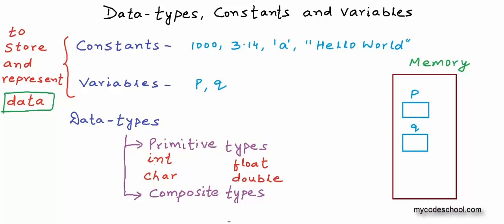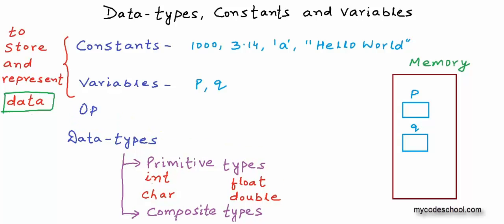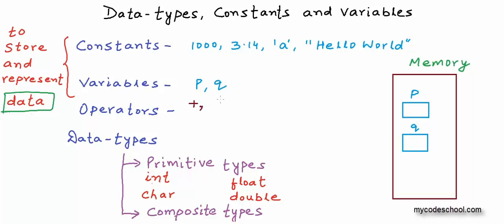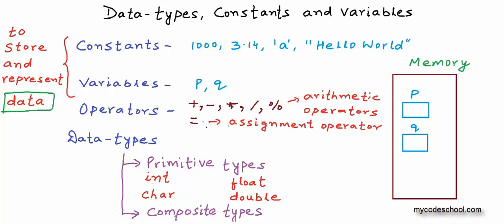There is one more building block that we need to know about before we can write programs to perform real computations — operators. Constants and variables are means to store and represent data; operators specify what to do with data, what operation to perform. Operators are of different types. We have arithmetic operators: plus and minus for addition and subtraction, asterisk for multiplication, backslash for division, and the percent sign for the modulus operation. A single equal-to sign is called the assignment operator; it is used to assign a value to a variable.